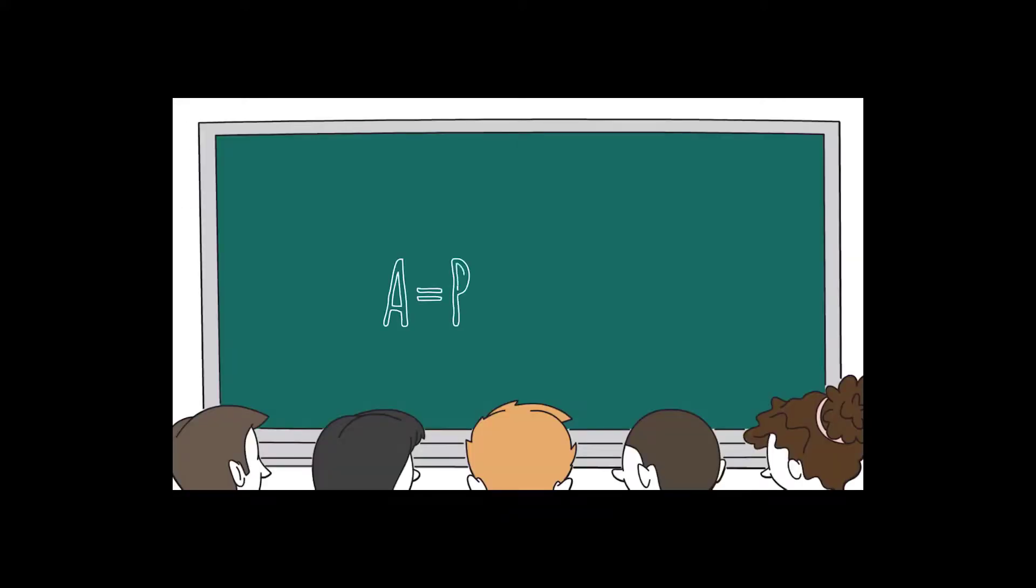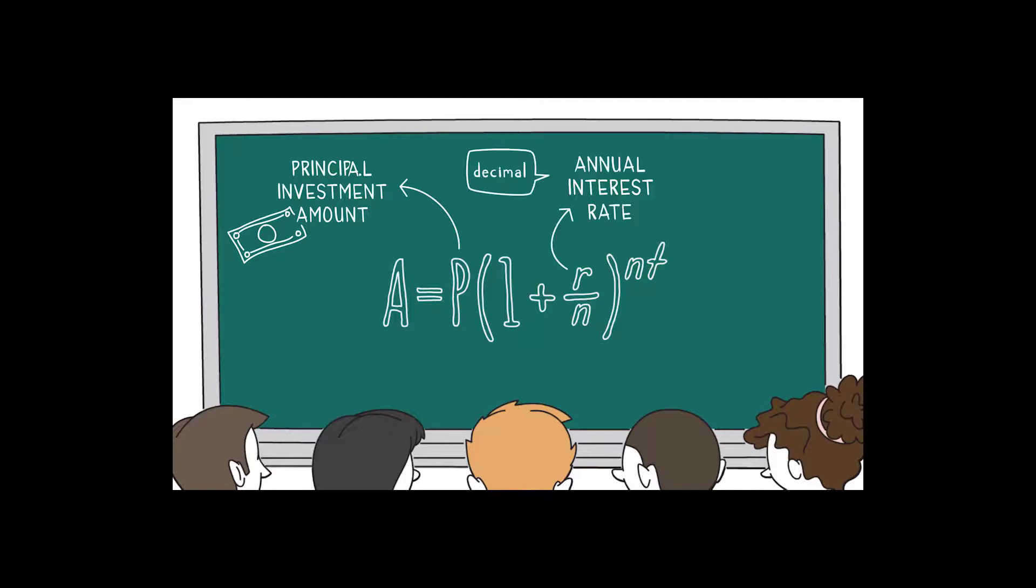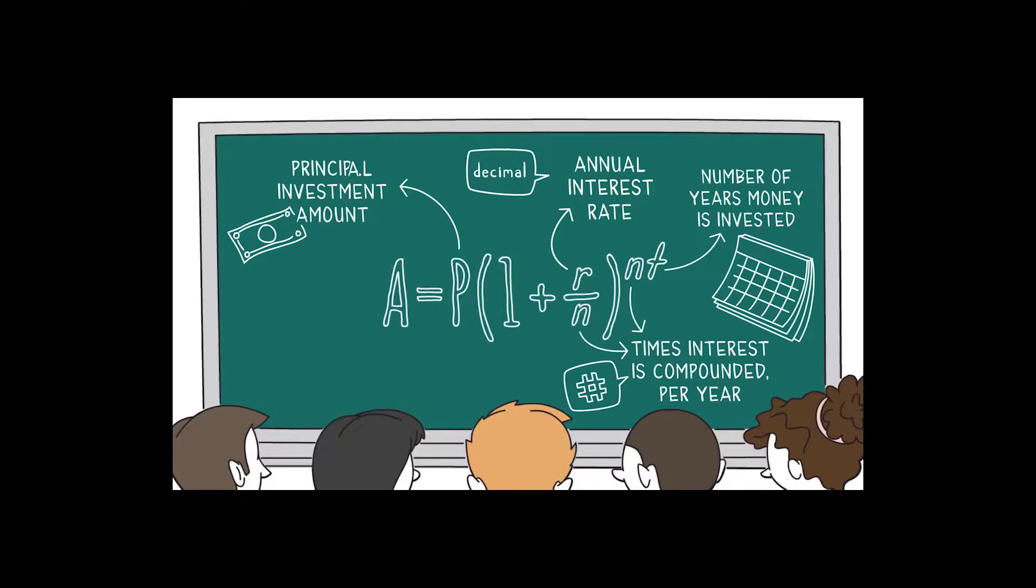Compound interest can be summed up in one easy equation. When the principal investment amount is multiplied by one plus the annual interest rate divided by the number of times the interest is compounded per year, then taken to the power of the number of times the interest is compounded per year times the number of years the money is invested, equals the future value of the investment including interest. Any questions?